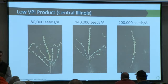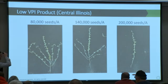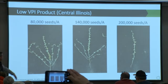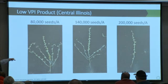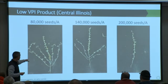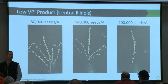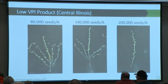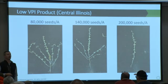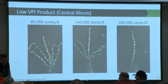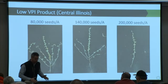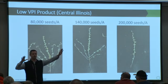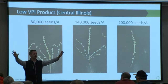This is a high VPI product — at 80,000 we're looking at six branches coming off that main stem. Even when bumped clear up to 200,000, high VPIs will still try to branch; they're resilient in their desire to branch. But we clearly drove more of that yield to the main stem by pushing to 200,000. The low VPI products — we still get branches at 80,000, all varieties do compensate — but we don't get quite as much branching as with the high VPI. When we get this one out to 200,000, we've created a stick. That's what this variety wants to do — it wants to go more main stem.